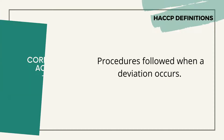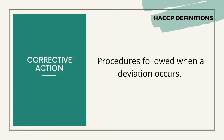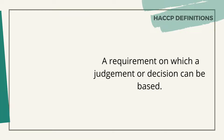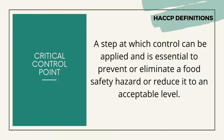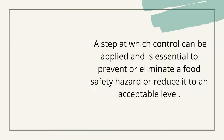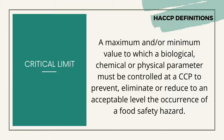Corrective Action: procedures followed when a deviation occurs. Criterion: a requirement on which a judgment or decision can be based. Critical Control Point: a step at which control can be applied and is essential to prevent or eliminate a food safety hazard or reduce it to an acceptable level.